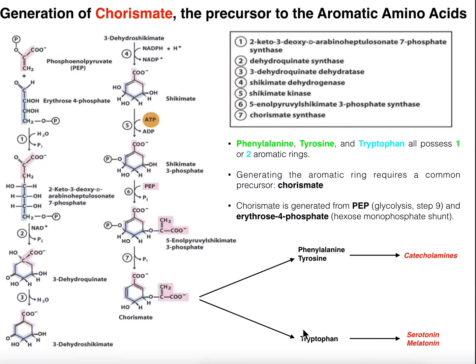What we tend to do with the three aromatic amino acids, at least for their biosynthesis, is we look at the biosynthesis of Charismate first, and then we'll look at the synthesis of phenylalanine and tyrosine in one video, and then tryptophan synthesis in another video. So it'll be three separate videos. Let's first delve into the synthesis of the molecule Charismate.